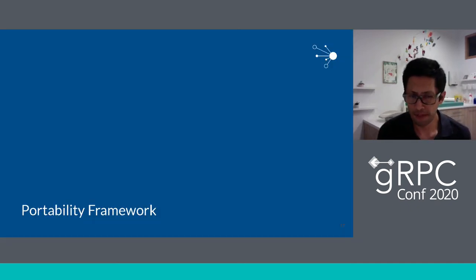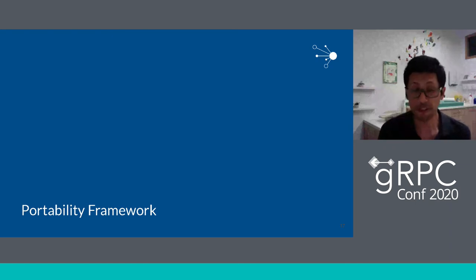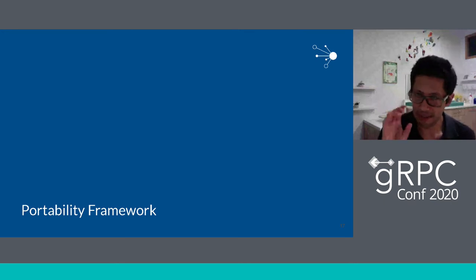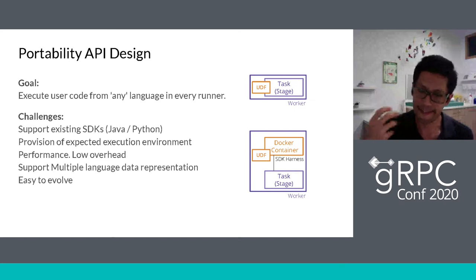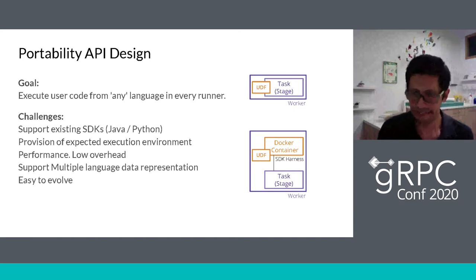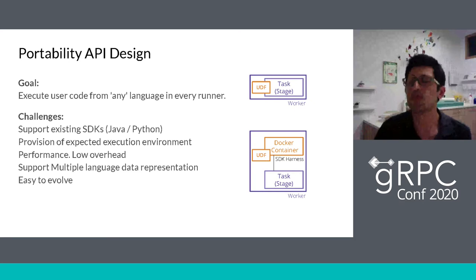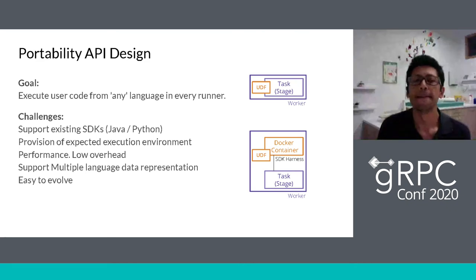We're also going to support multiple language data representation and want an easy-to-evolve system. The key idea is that instead of using user-defined functions directly as we do with Java, we delegate this execution to a companion container — like a sidecar container — that we control through services to pass data, pass the function, and execute it in every task run by the worker. This is basically the big idea.